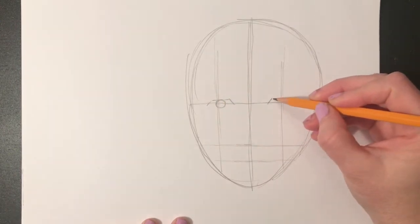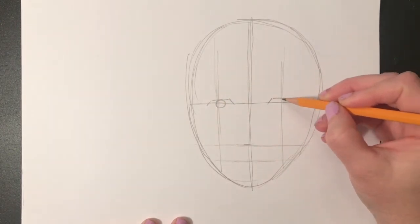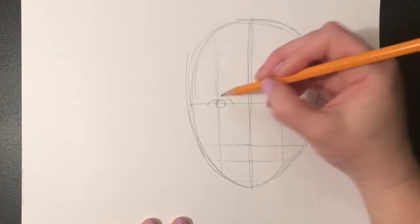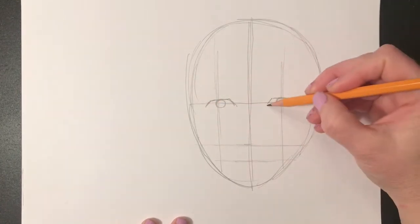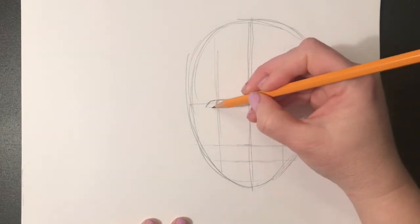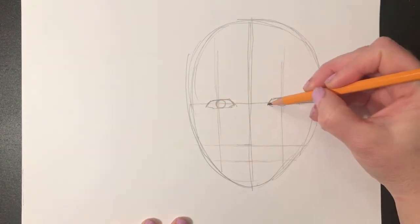I'm just gonna put a rough sketch of some eyes in the place where I have measured them out to be. I'll show you in a moment how to make the eyes more realistic, but for now these will do. The middle of the eye is lined up where those two lines are intersecting.